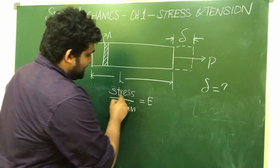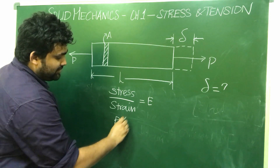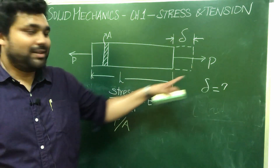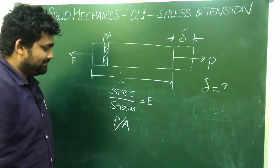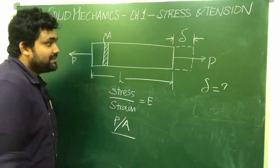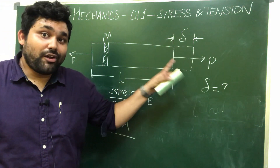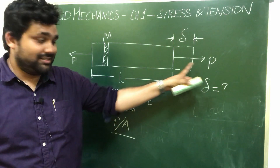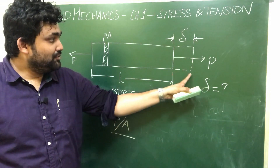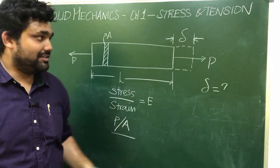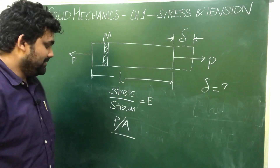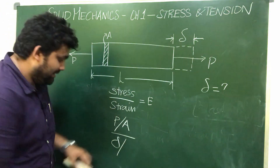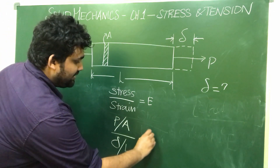Expanding the formula: stress is force P divided by cross-sectional area A, so stress equals P by A. Strain is total elongation delta divided by actual length L, so strain equals delta by L. Therefore, (P/A) divided by (delta/L) equals Young's modulus E. The total elongation is delta. When we apply force, the material elongates and delta is the total elongation.